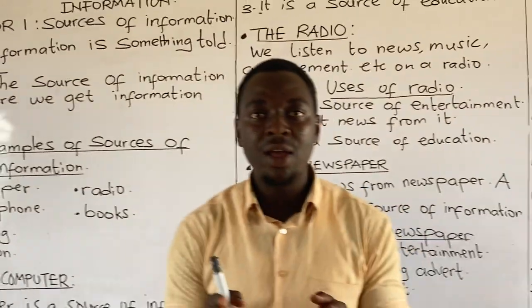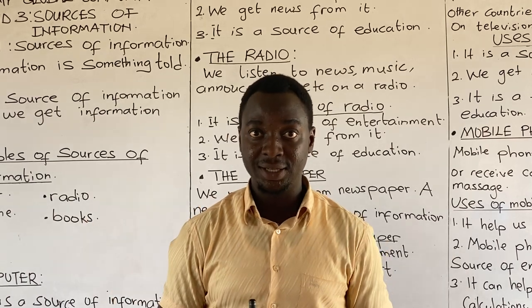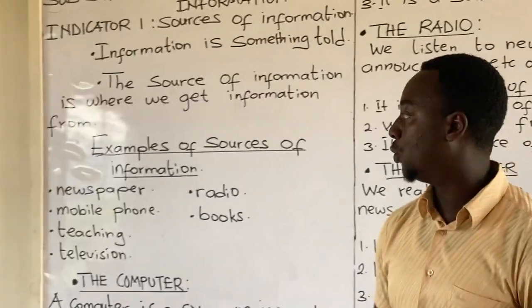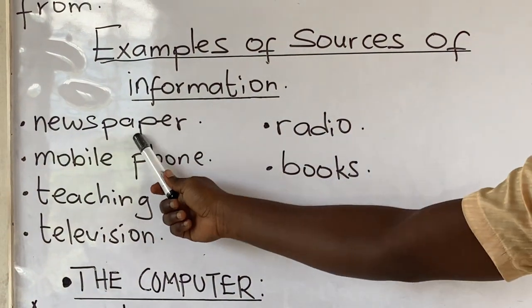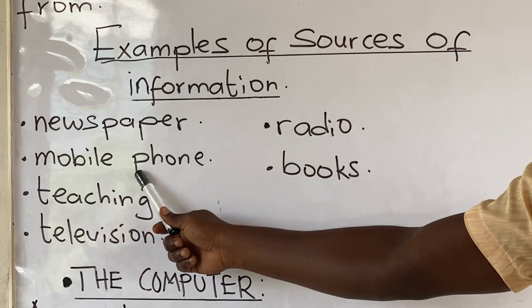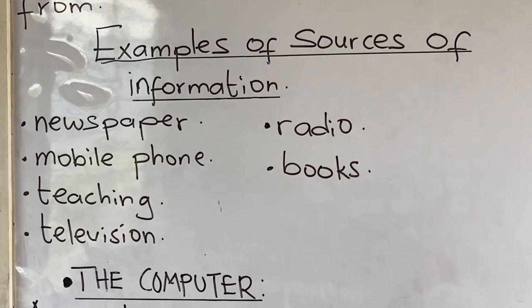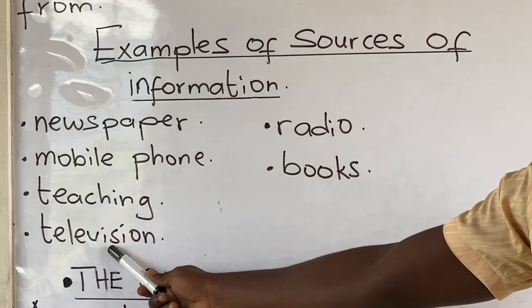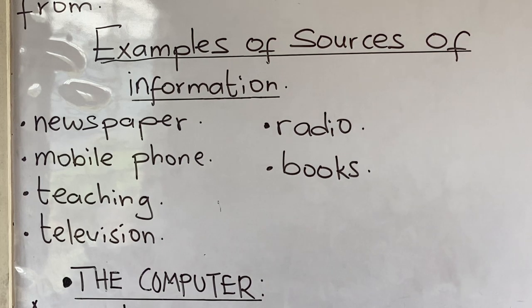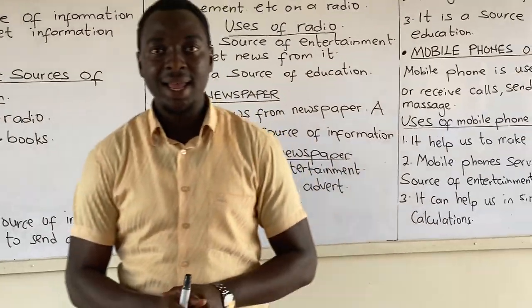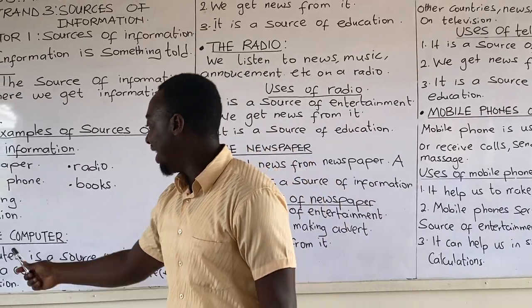Examples of where we get information from — we get information from numerous places. Let's look at some few examples: Newspaper, Mobile phone, Teaching. As I'm teaching, I'm giving you information. Television, Radio, Books. Let's pick them one after the other to know what each entails. The computer.